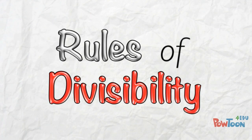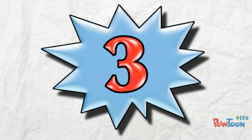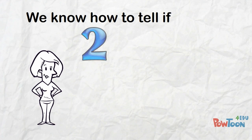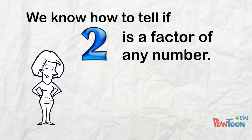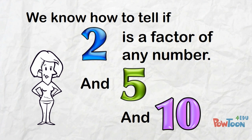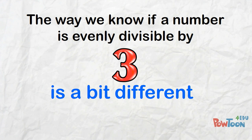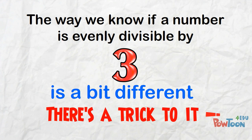Rules of Divisibility. We know how to tell if 2 is a factor of any given number, and 5 and 10 — those are the easy ones, we can tell at a glance! The way we know if a number is evenly divisible by 3 or not, without actually doing a division problem — that's a bit different! That has a trick to it!